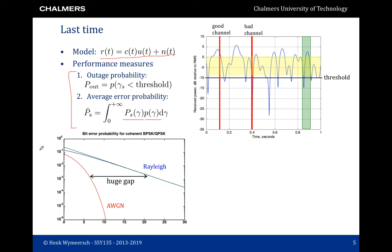It can be shown that for the same average SNR, the performance of the additive white Gaussian noise channel is very different from the performance over Rayleigh fading. The curve in red is for the AWGN channel and the curve in blue for the Rayleigh fading channel. We see a huge gap of multiple decibels, which is what we will try to recover today — going back to performance approximating the additive white Gaussian noise channel.